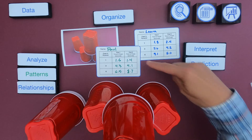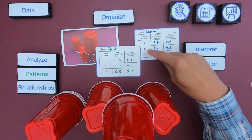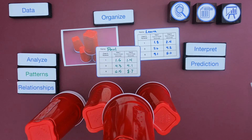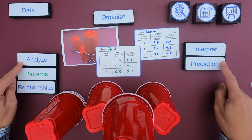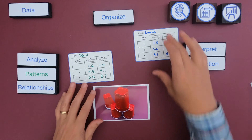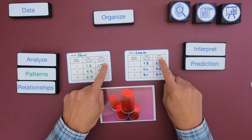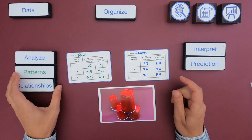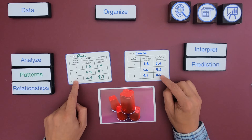Now it's your turn. The data you're looking at are results from my wife and me. We were stacking cups, seeing how fast we could stack a pyramid that was one cup high, three cups high, and six cups high. I'd encourage you to pause the video, look at the data, write down what the data is, organize it, analyze it, and then interpret it. For both Paul and Laura there are two trials, and the thing that stays the same is the cups in the pyramid.